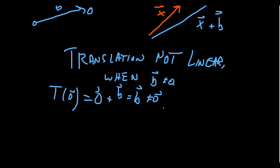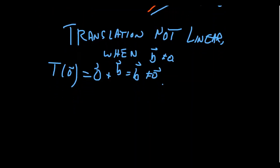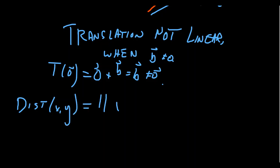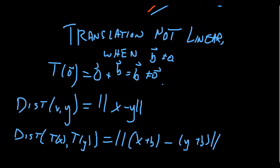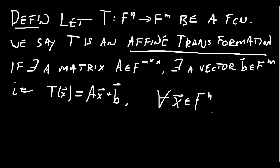But translations are going to be isometries. If you take the distance between two vectors x and y using this map, you want the length of x minus y. If you take the distance of Tx and Ty, this is the distance between x plus B and y plus B. You can see that x plus B minus y plus B — the B's cancel out, the translation cancels out, and you get the same thing. So translations are isometries, and multiplication by an orthogonal matrix is an isometry.